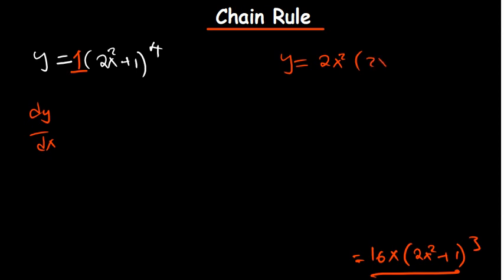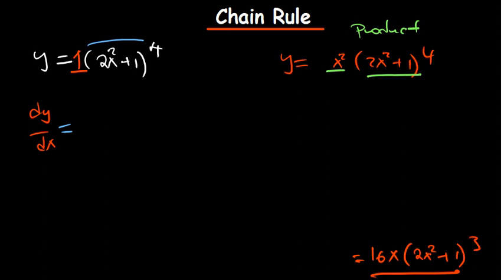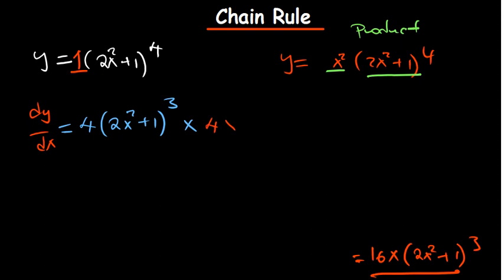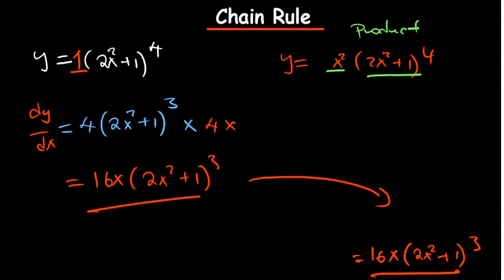If you do have a second function multiplied in, the formula changes — it becomes the product of two different functions, so you'd apply the product rule. Going back to our question using normal differentiation with the power rule: take the coefficient 1, multiply by the power 4 to get 4, maintain what's in the brackets, reduce the power by 1 to get 3, then multiply by the derivative of what's inside the brackets. The derivative of 2x squared plus 1 is 4x, so 4 times 4x gives 16x, and (2x squared plus 1) to the power 3 remains. This is much less complicated than the full formula.